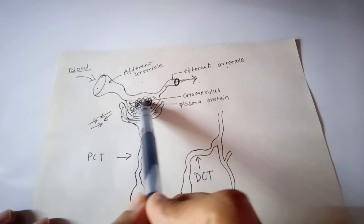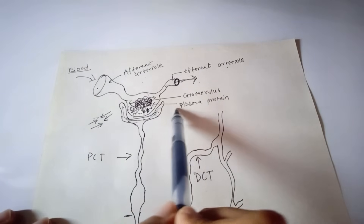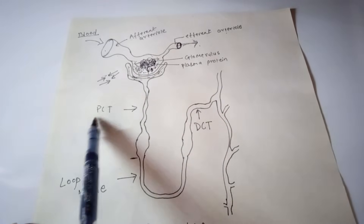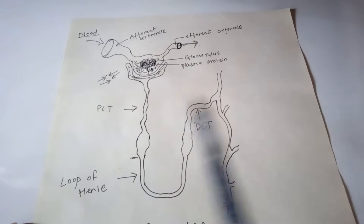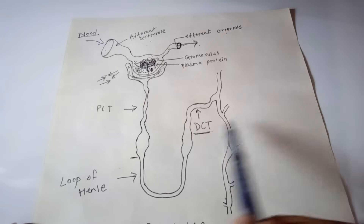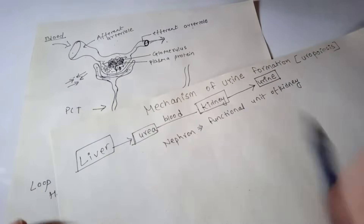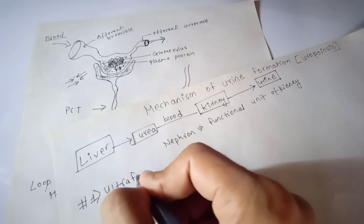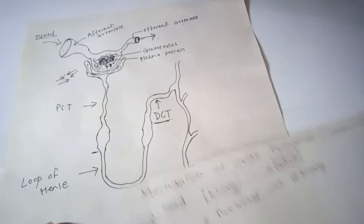In the nephron figure, we can see the Bowman's capsule, the glomerulus, plasma proteins, PCT (proximal convoluted tube), loop of Henle, and DCT (distal convoluted tube). Urine formation occurs in three different steps: the first step is ultrafiltration, the second step is selective reabsorption, and the third step is tubular secretion.